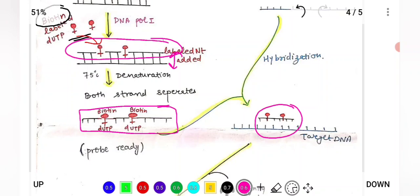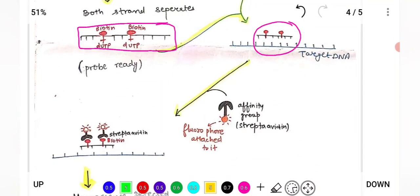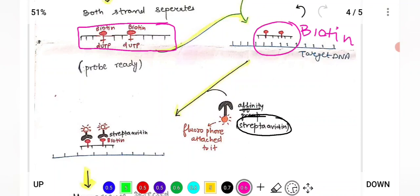Now we need to check whether the probe has bound or not, and where it has bound. For this, we add an affinity group called streptavidin. Streptavidin has high affinity towards biotin — the reporter molecule used to label the probes. So wherever biotin is present, streptavidin will go and bind to it.